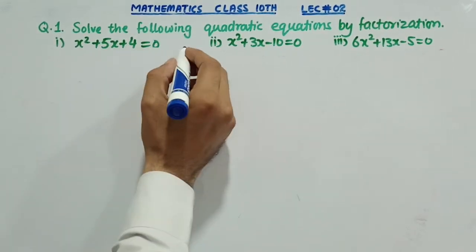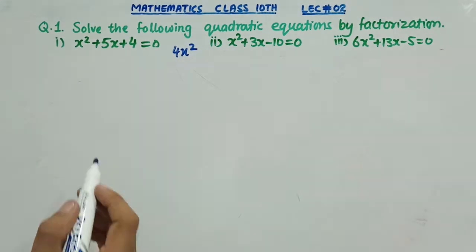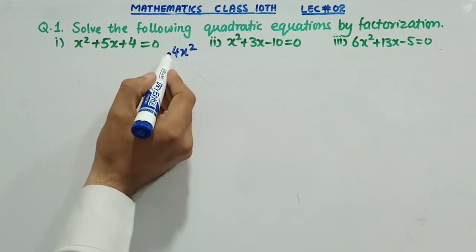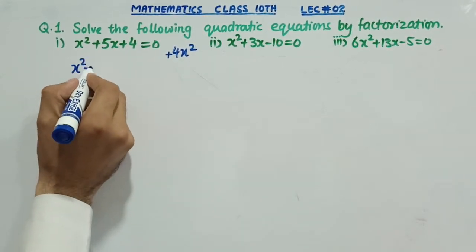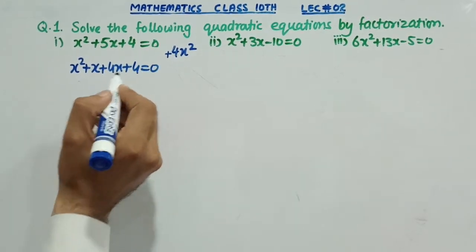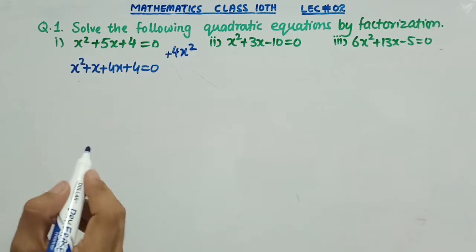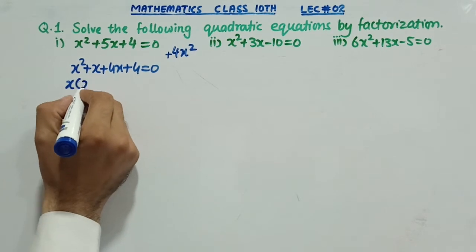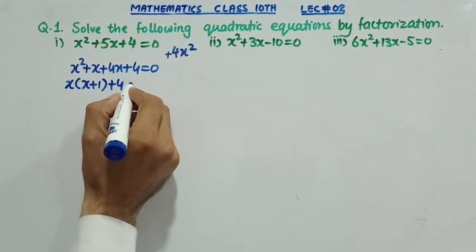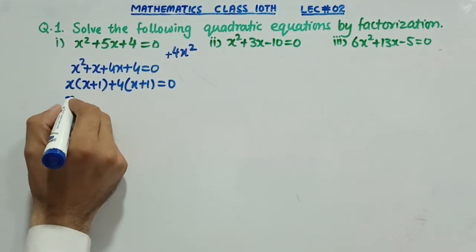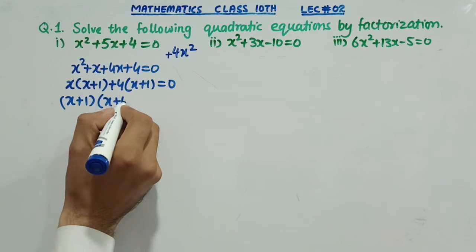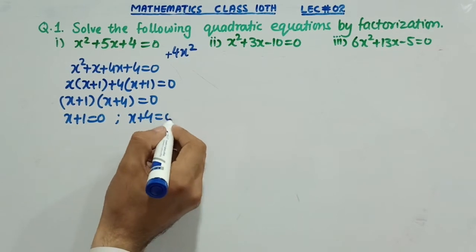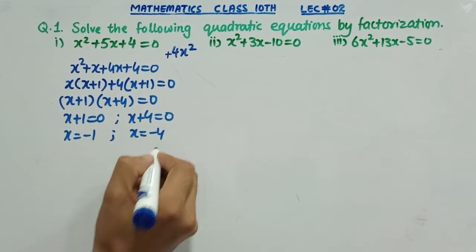Then we have x squared plus 4x equal to 0. In 4x, the product gives us x sides into 2 equals 4x. So x plus 1 equals 0, or x plus 4 equals 0. Therefore x will have minus 1 and x will have minus 4.